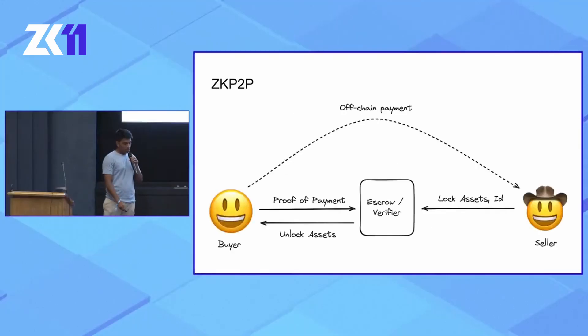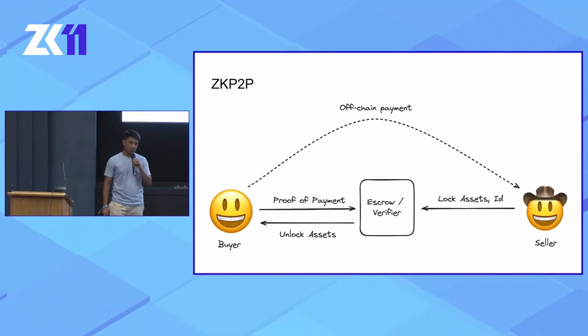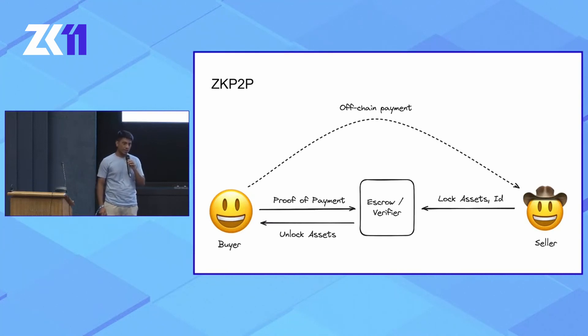Hi everyone, I'm Sachin from the ZKP2P team. We have very limited time, so let's get started. ZKP2P is a trust-minimized fiat-to-crypto on-off-ramping protocol.